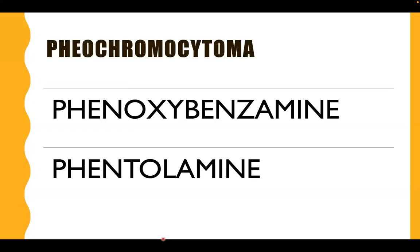What about the adrenal medulla tumor pheochromocytoma, which usually presents with elevated levels of VMA or vanillylmandelic acid and usually presents with hypertension, headache, excessive sweating, and palpitations? The first-line drug is phenoxybenzamine. If phenoxybenzamine is not in the choices, you can give phentolamine. If both are in the choices, the best answer is phenoxybenzamine. This is ideally given at least one to two weeks before surgery to prevent a hypertensive crisis.